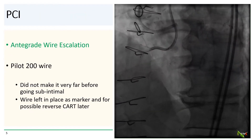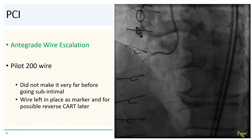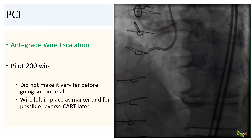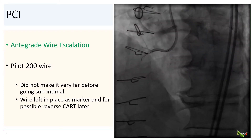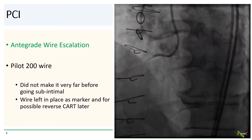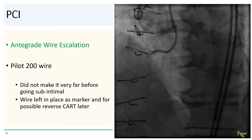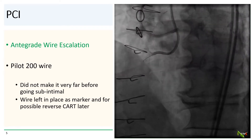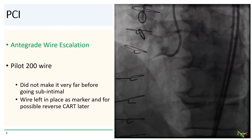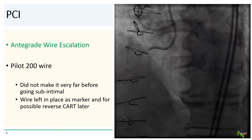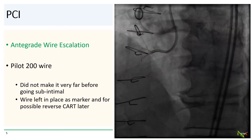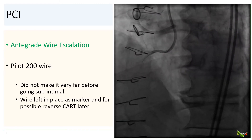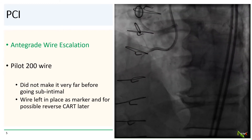So we got to work. We used dual eight French guides and started with a Pilot 200 wire via a Turnpike microcatheter. The Pilot 200 did not make it very far before dissecting the vessel and ending up in the subintimal space. This wasn't particularly surprising given the amount of disease in the RCA. We did leave the wire in place, both to be used as a marker for the retrograde wire and for possible reverse CART later on.